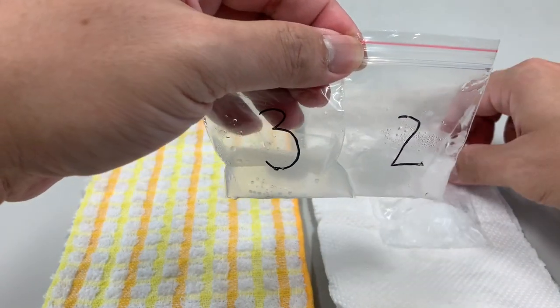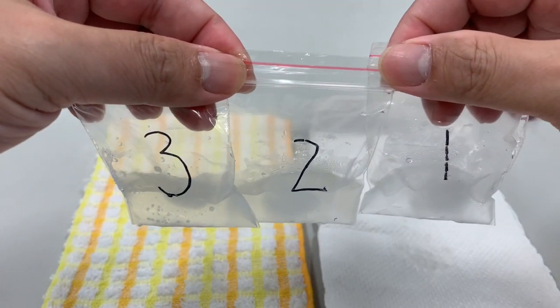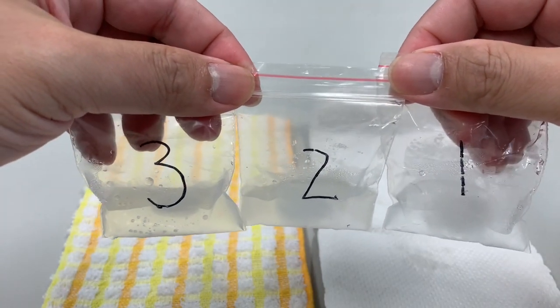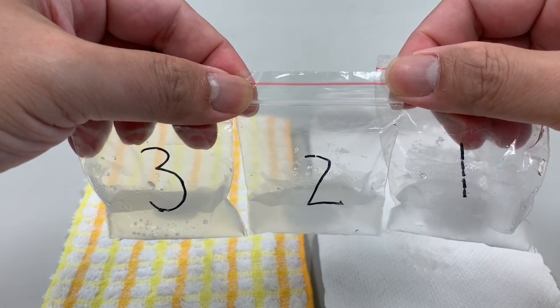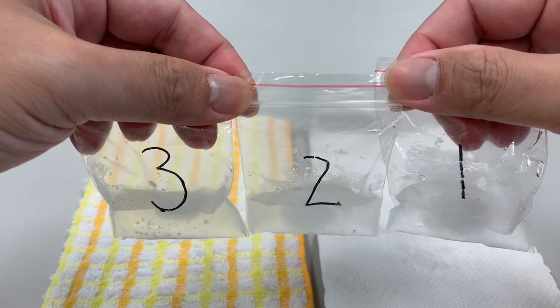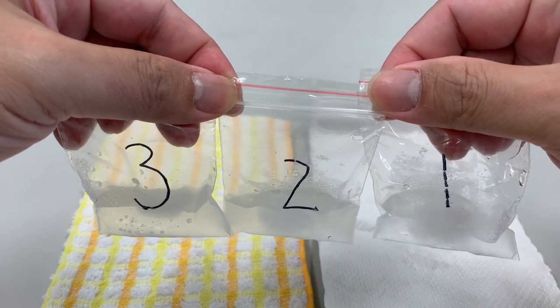Comparing number 2, number 3 and number 1, number 3 seems to have more water in the plastic bag than number 2 and number 1. It means that number 3 has melted more than sample number 1 and number 2.